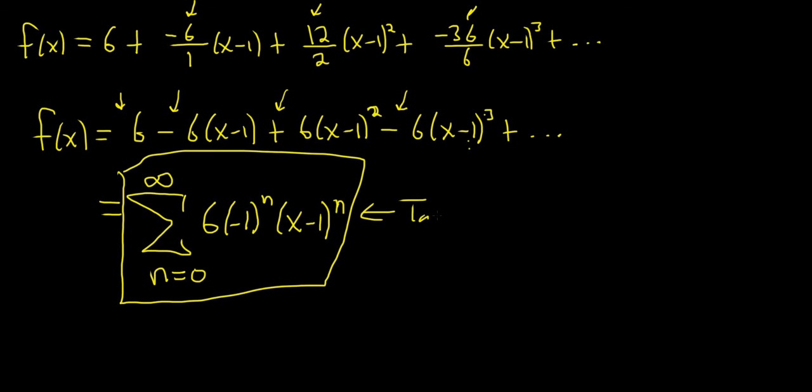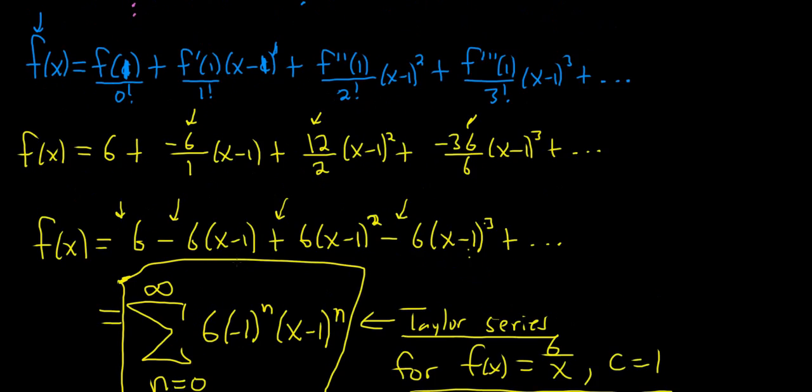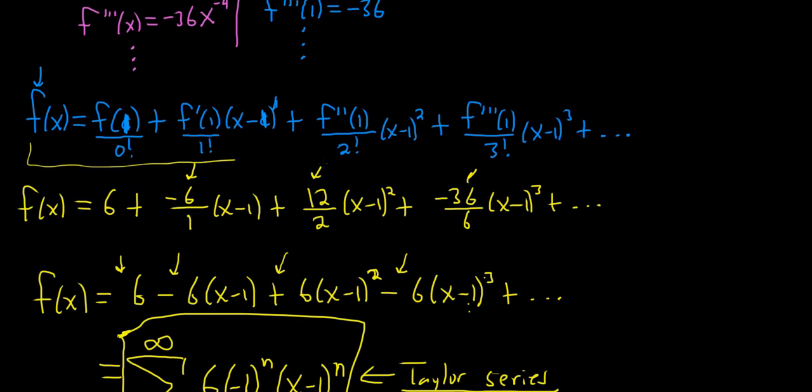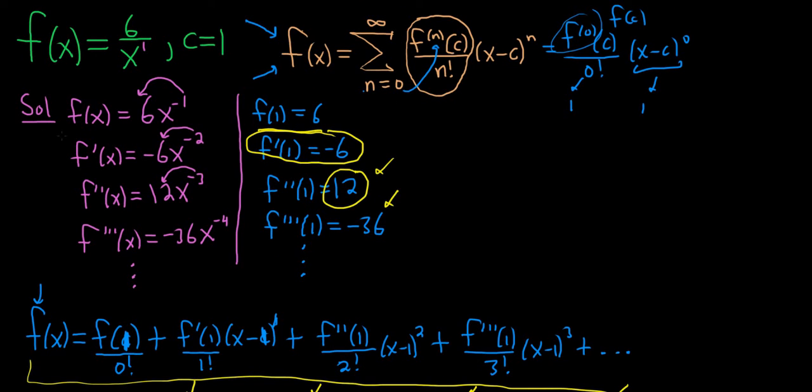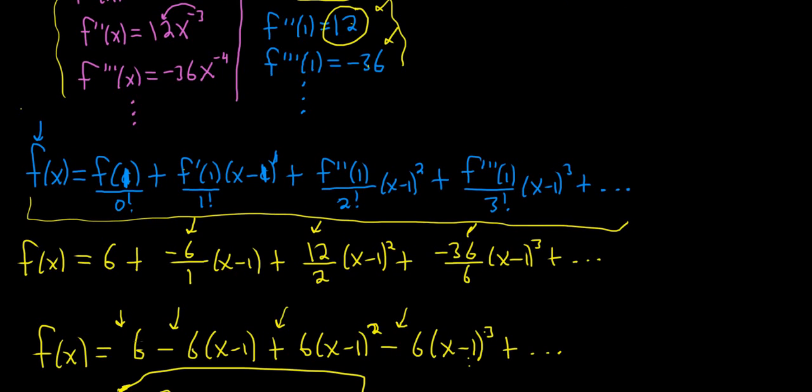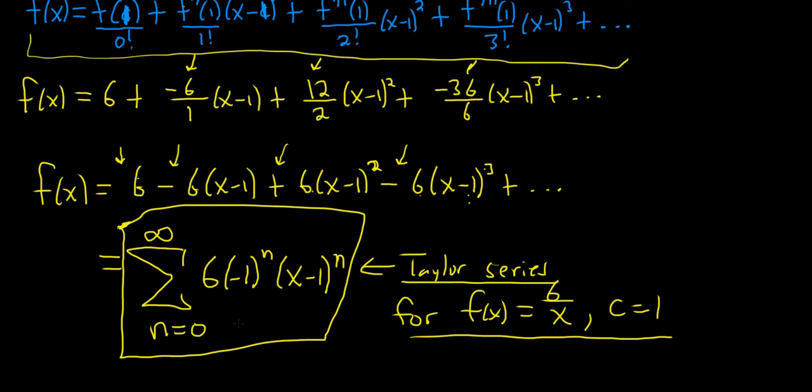This would be the Taylor series for f of x equals 6 over x centered at c equals 1. So this is the long way of doing it. And this problem worked out really nicely. We were able to find a pattern, which is not always so easy. And I want to emphasize that we weren't able to find a pattern until we wrote it out the long way. We had to actually write it out and incorporate the division of the factorials. It wasn't until we wrote it out and divided by the factorials where we saw that it was just going to be 6, negative 6, 6, negative 6. So that pattern did not emerge until we wrote it out the long way. I hope this video has been helpful.